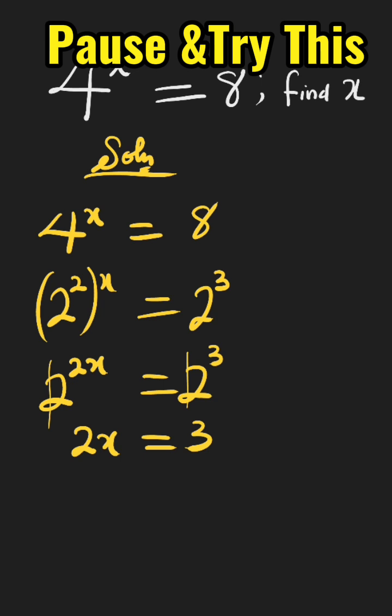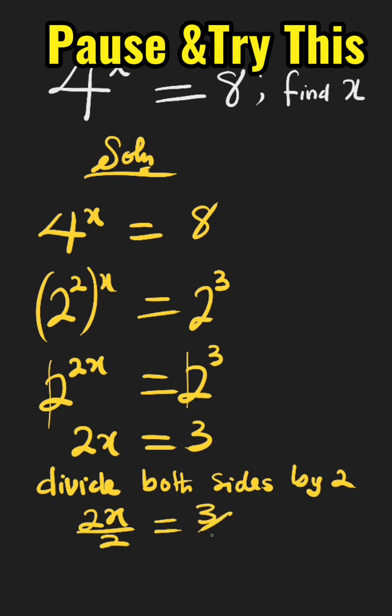Now we divide both sides by 2. Then we have 2x all over 2 equal to 3 all over 2.